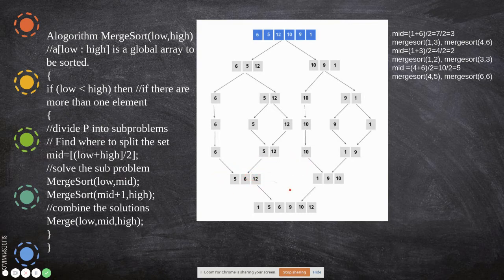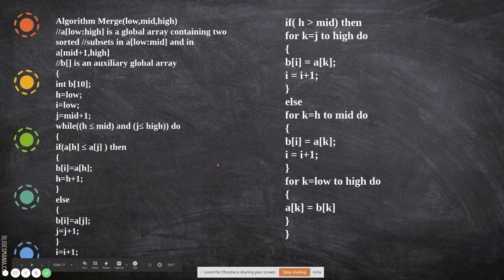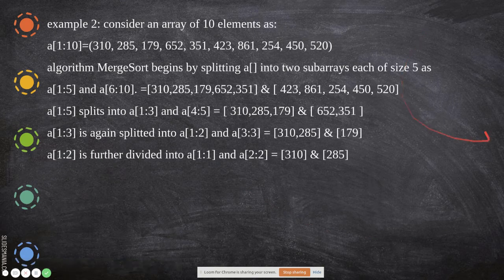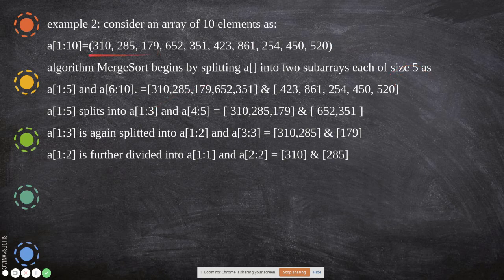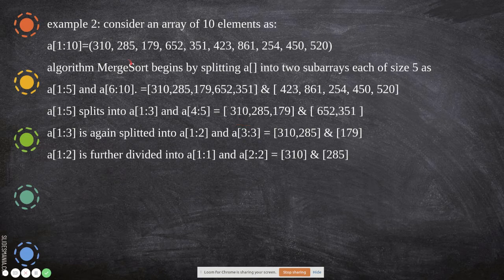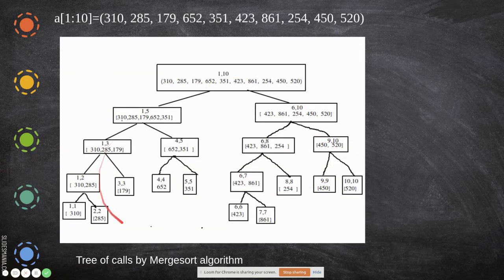Now let us take another example. Consider the values: 3, 10, 285, 139, 652, 351, and more — an unsorted list of 10 elements. Initially the middle value is 5, so we split into indices 1 to 5 and 6 to 10. Then 1 to 5 is split further into 1 to 3 and 4 to 5, containing values like 3, 10, 285 and 139, 652, and 351.